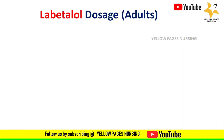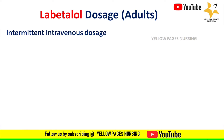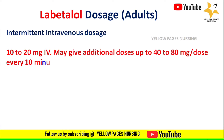Labetalol is given for adults in usually two forms: intermittent intravenous dosage and continuous intravenous infusion dosage. In case of intermittent intravenous dosage, 10 to 20 milligram is the IV dose given; additional doses up to 40 to 80 milligram may also be given every 10 minutes until the desired effect is achieved.